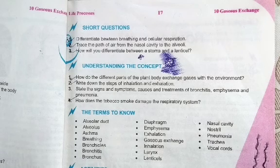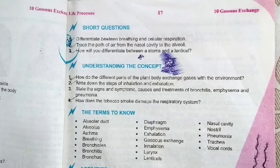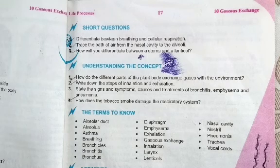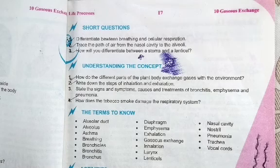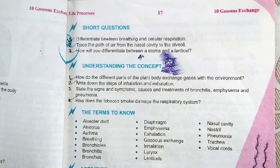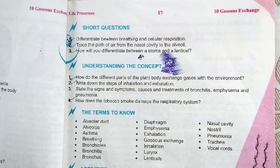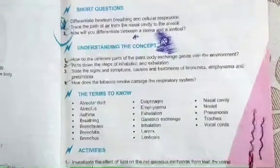The next question is: trace the pathway of air from the nasal cavity to the alveoli. This was discussed in earlier lectures. The pathway is: external nostrils, nasal cavity, internal nostrils, pharynx, larynx, trachea, bronchi, bronchioles, alveolar duct, and alveoli.